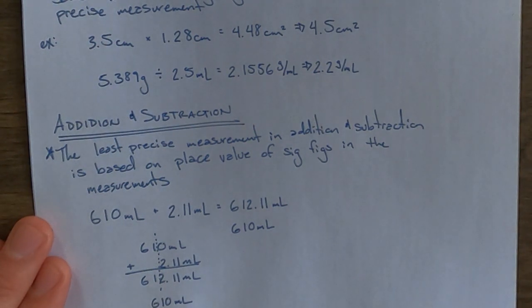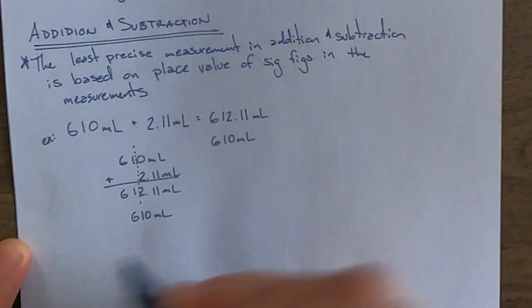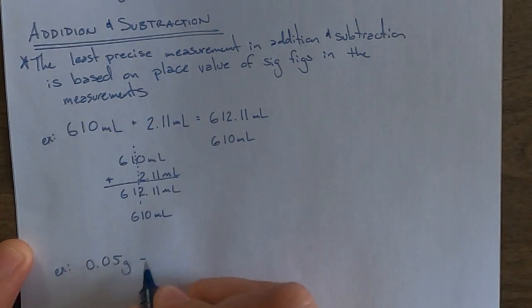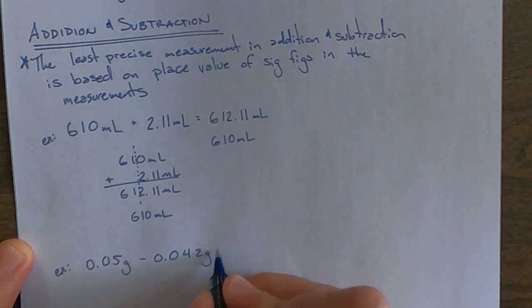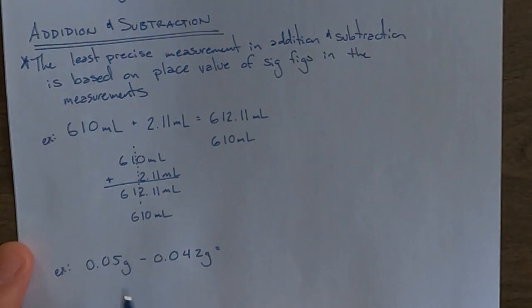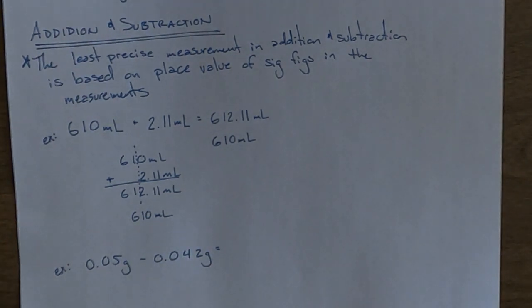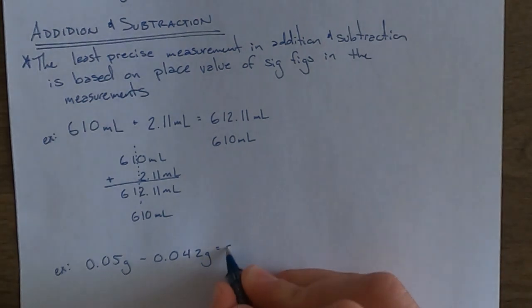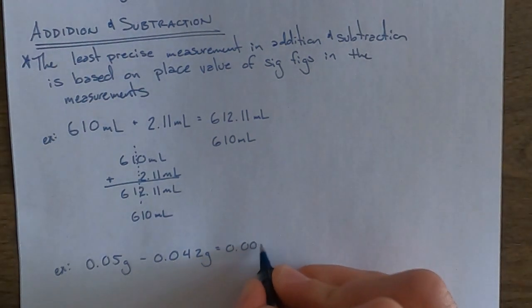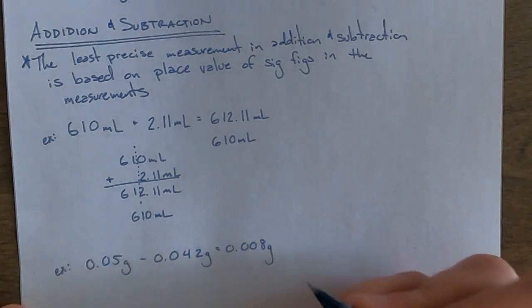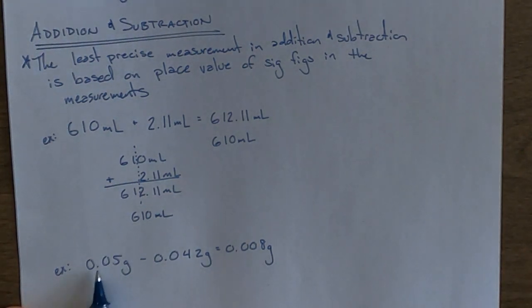We'll look at an example now that is subtraction and involves small numbers. Here we can do this on a calculator or in our heads, and it would tell us that the answer to this problem without any rounding would be 0.008 grams. But if we look at place value, this one goes to the hundredths place.